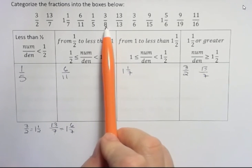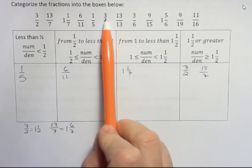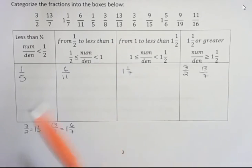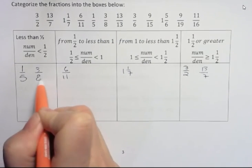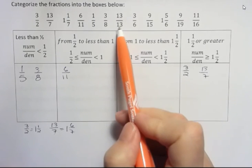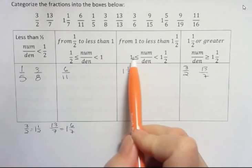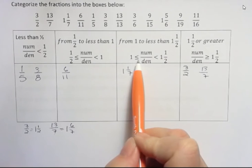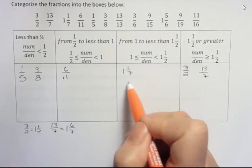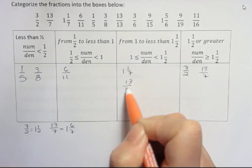3 over 8. Well, half of 8 would be 4 and our number is less than that. So this is another one that's less than 1 half. 13 over 13 is exactly 1. If it's exactly 1, it fits into this box. It's equal to 1. So 13 over 13.